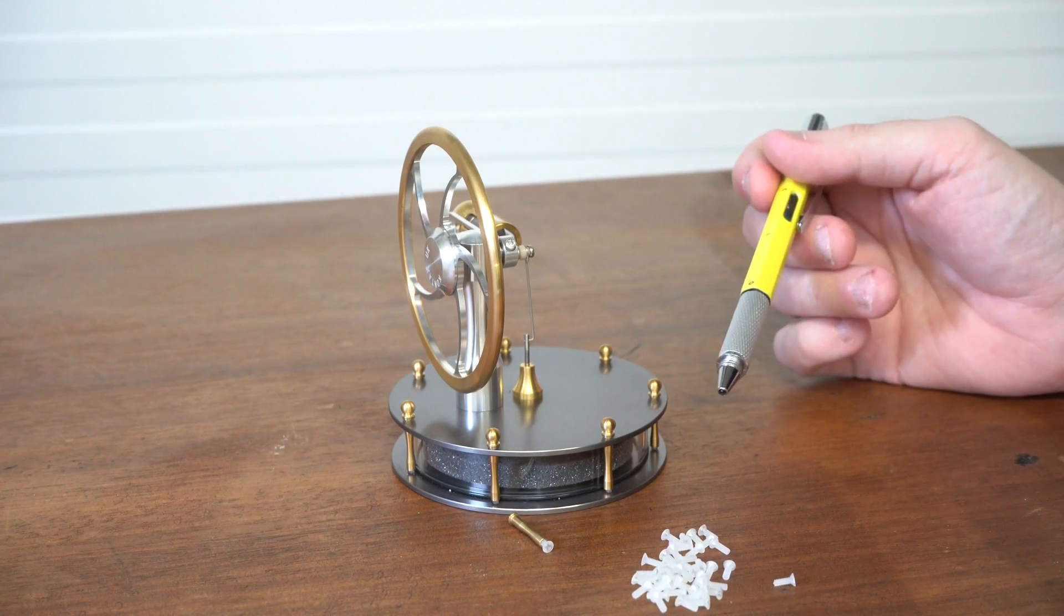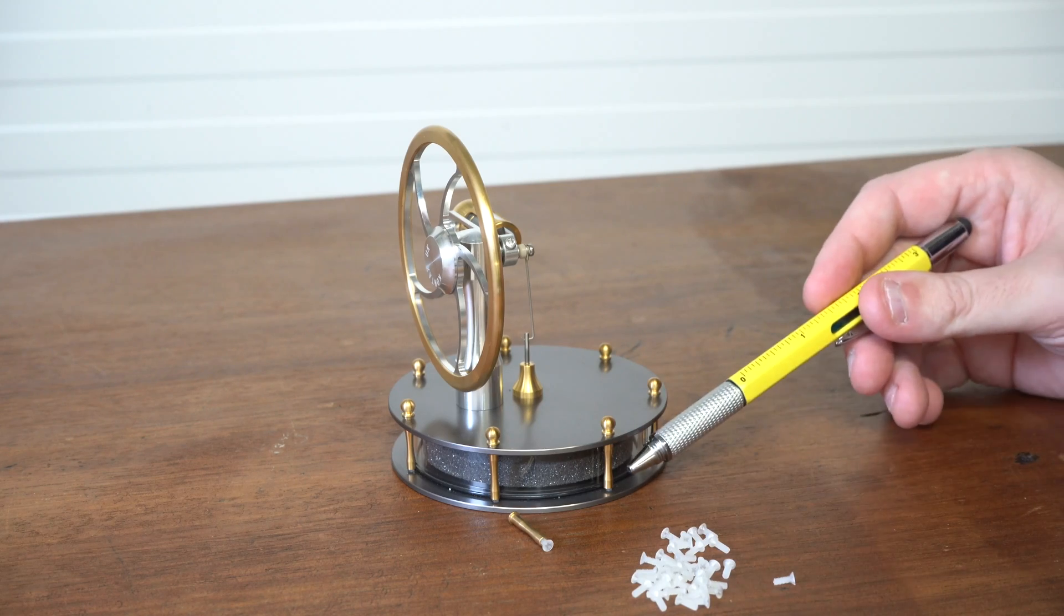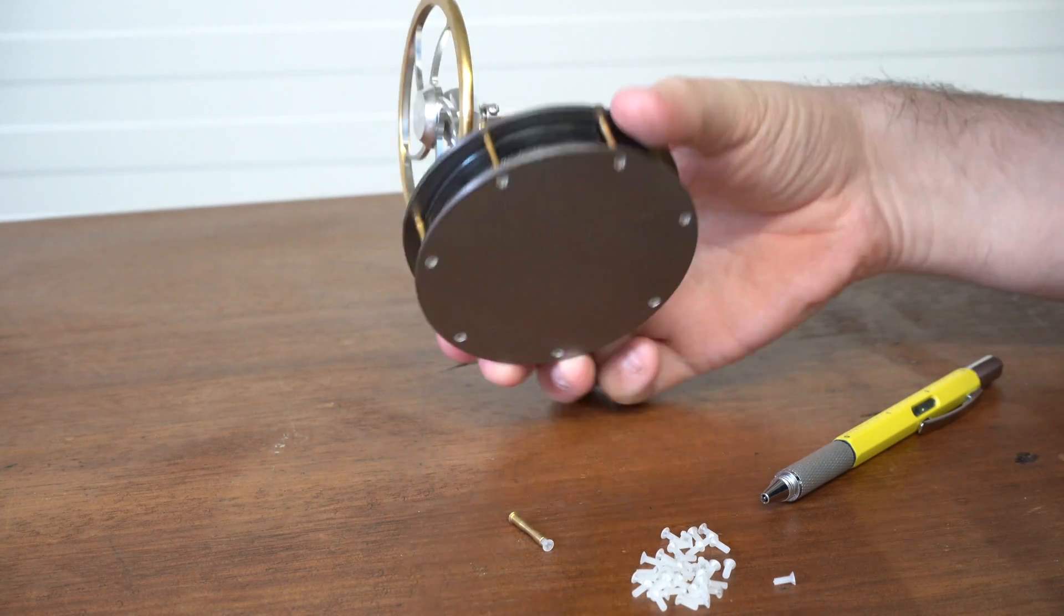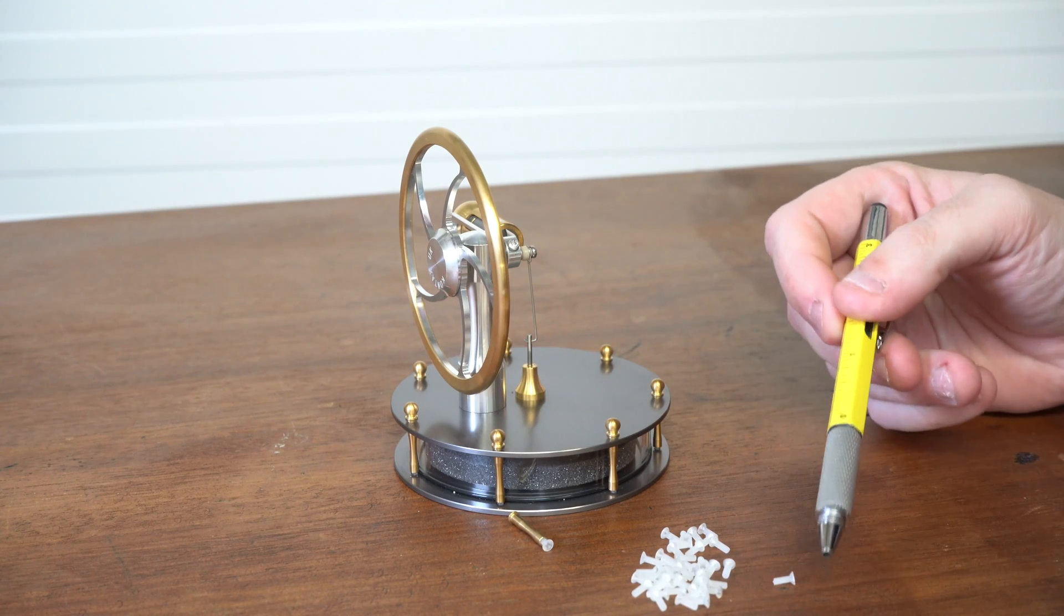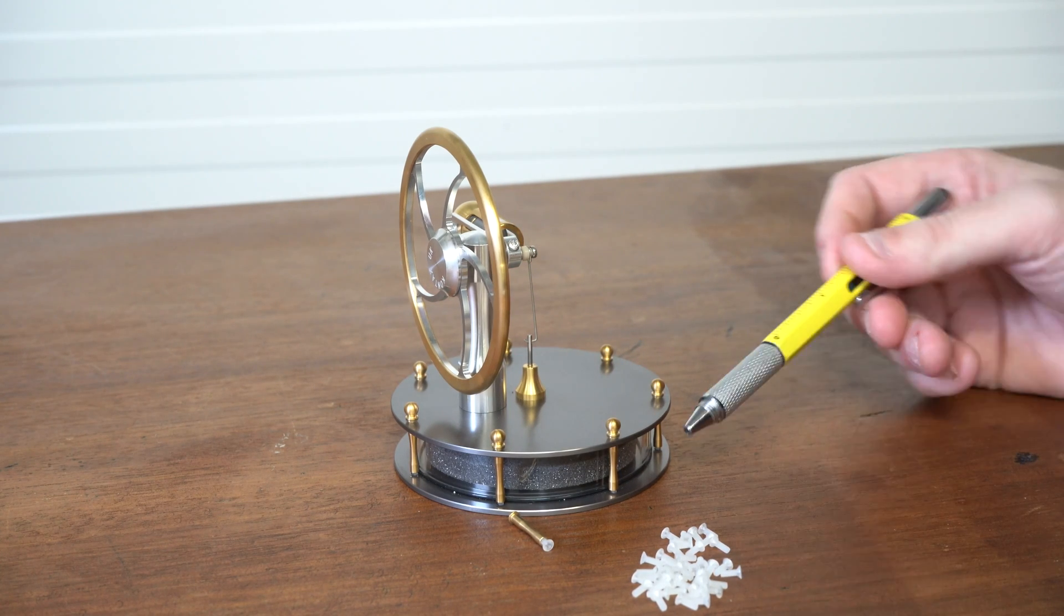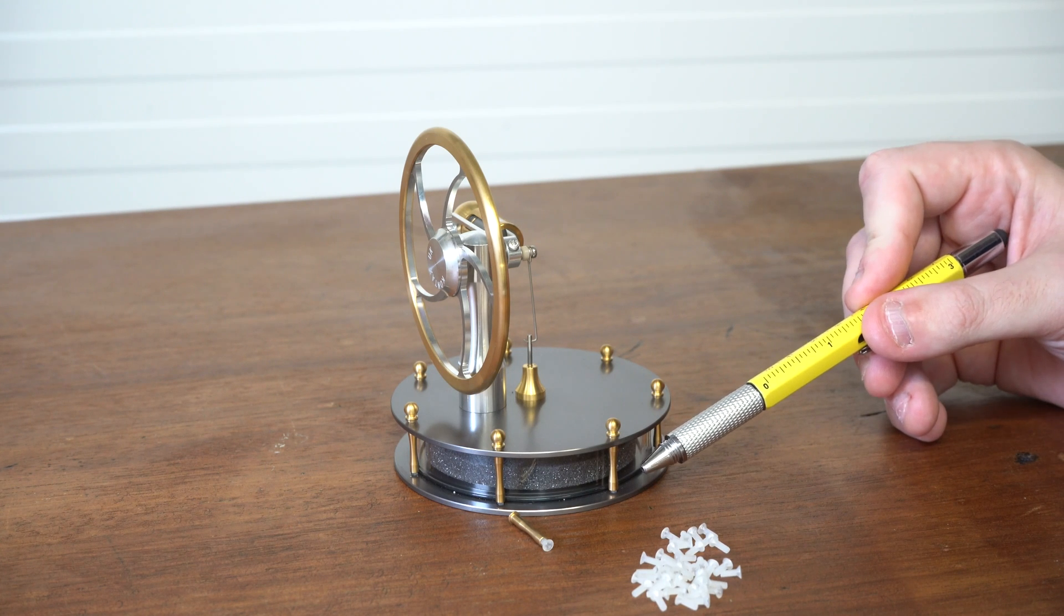I just wanted to talk about why we use nylon screws in the base of our low temperature differential engines. The reason for this is we need to ensure that we don't have heat transfer between the two plates, because these engines work on a temperature differential.